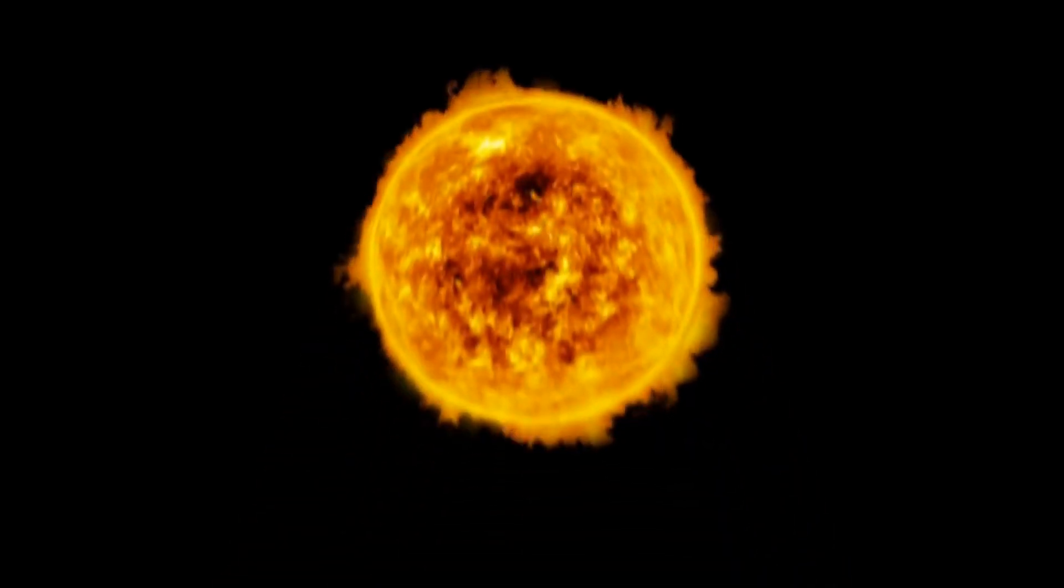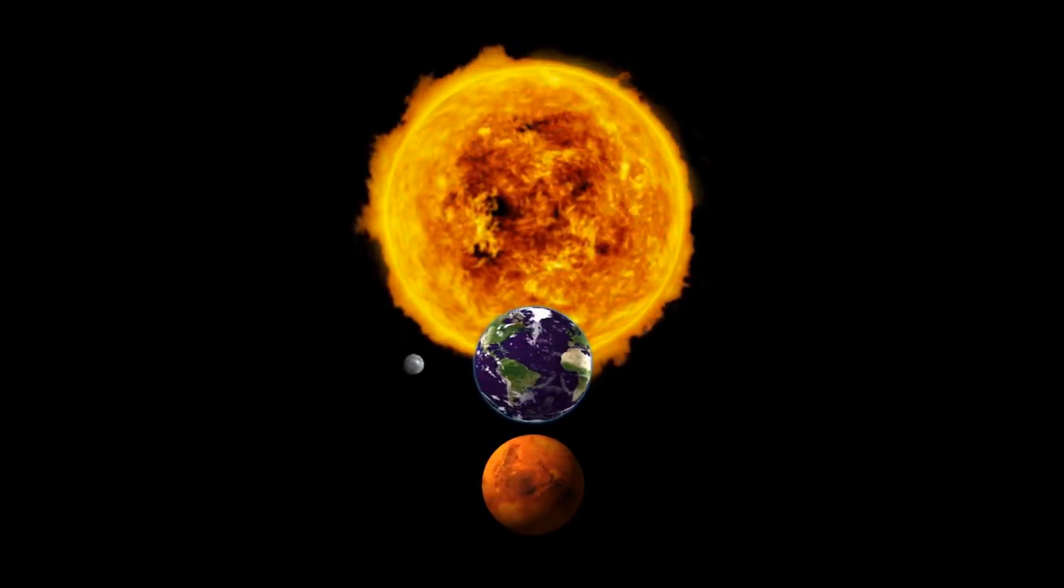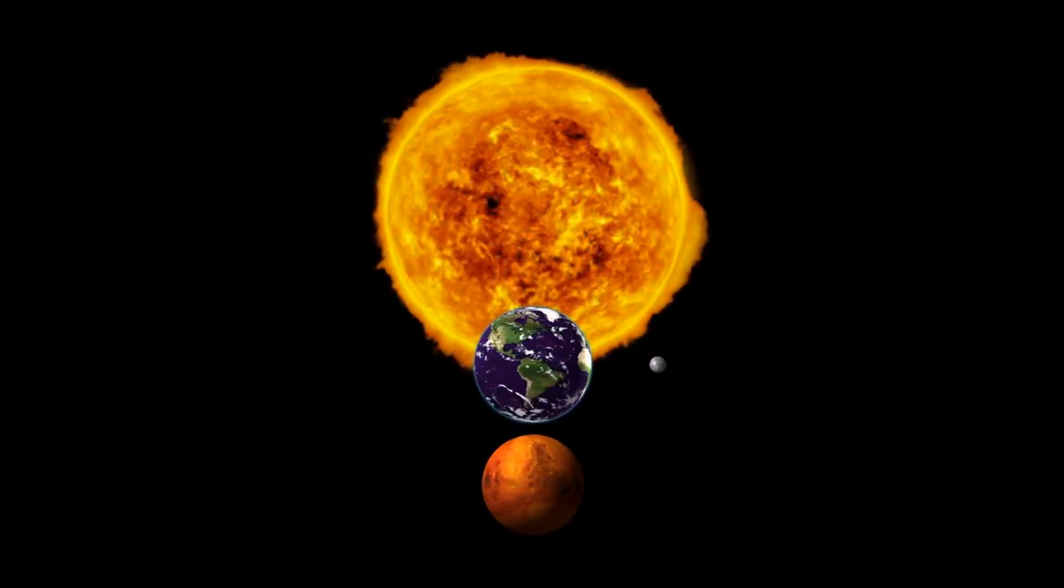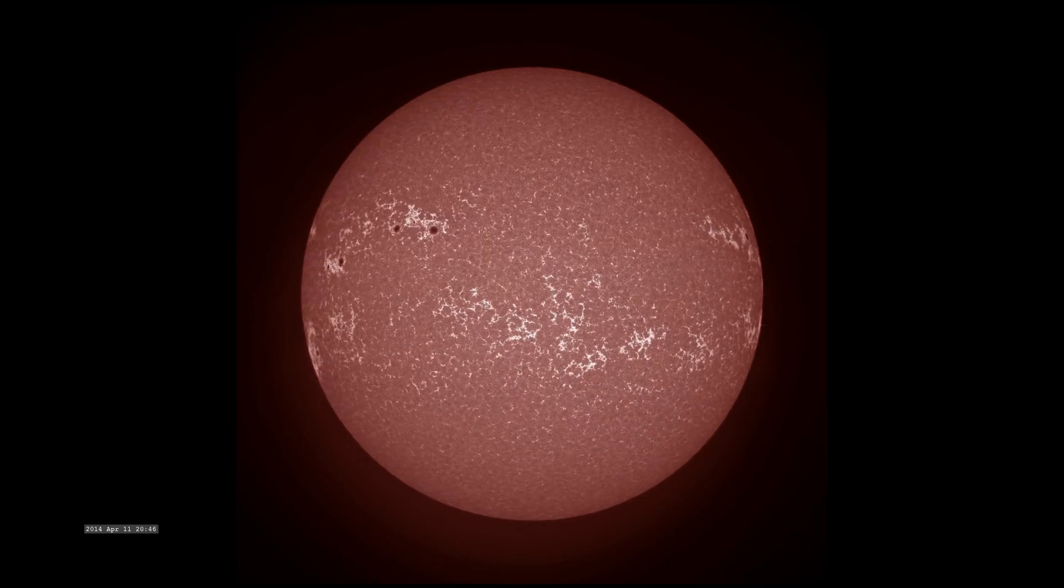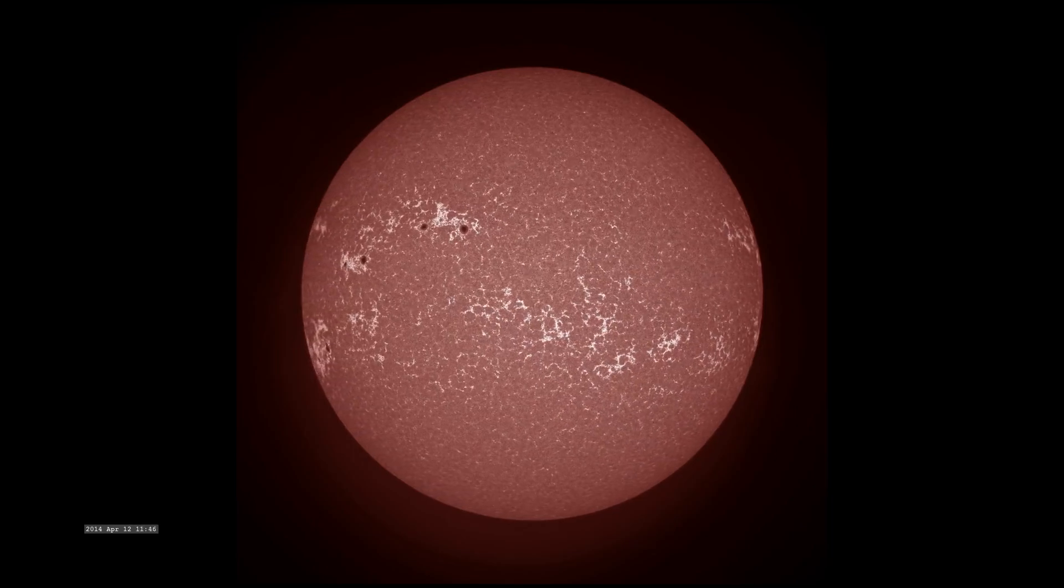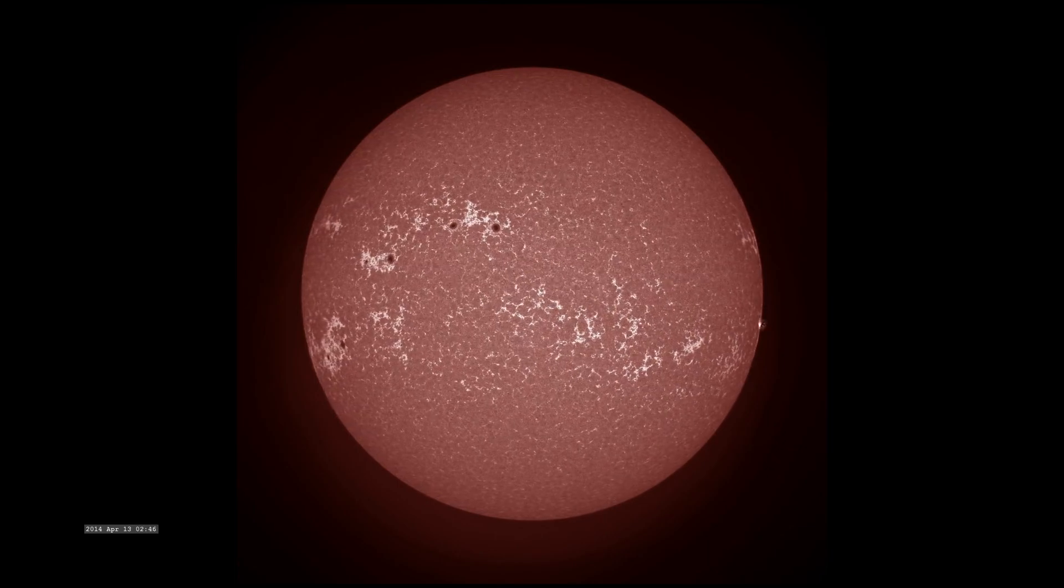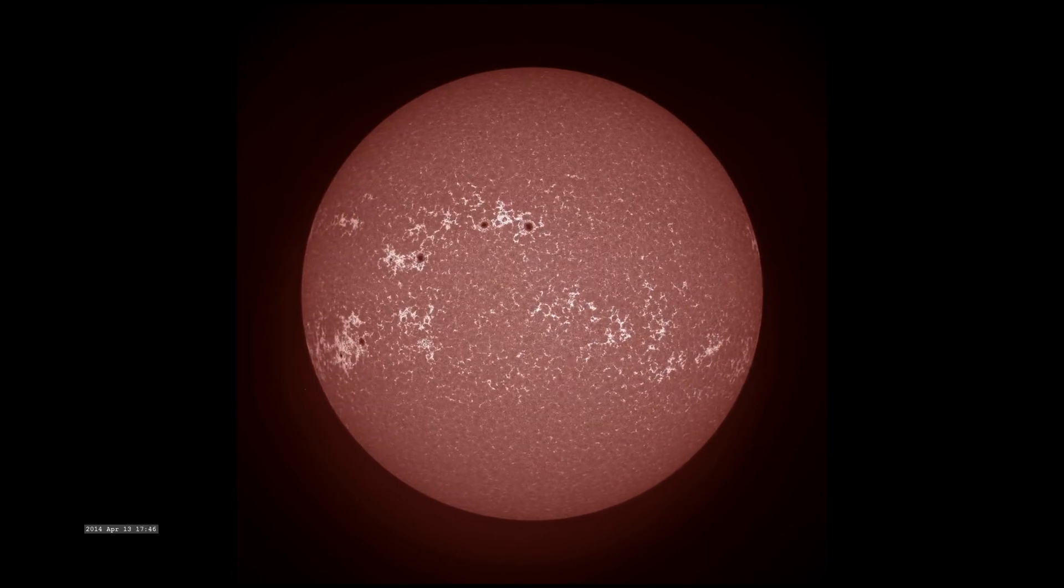Solar cycle 25 began in 2019 and is predicted to reach its peak in July of 2025. The sunspot eruption that produced the strong solar flare was recorded by NASA's Solar Dynamics Observatory as an extreme ultraviolet pulse.